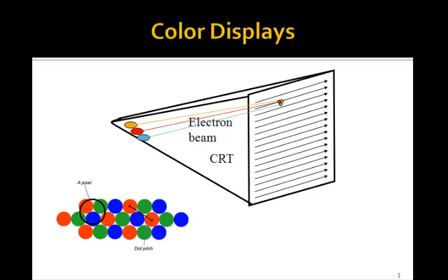Color displays work somewhat differently. There are actually three guns in the old CRTs. On the phosphor, there are red, green, and blue dots arrayed in sort of this packed hexagonal array. And what happens is there's actually a shadow mask behind the screen with a whole bunch of little holes drilled in it, such that the electron beams, which are offset, go through different holes.